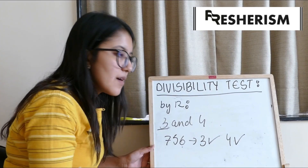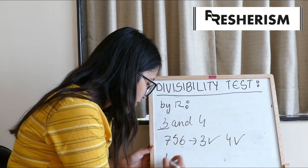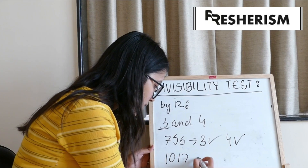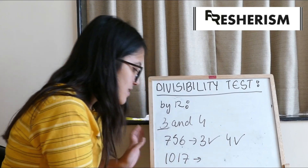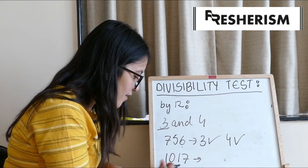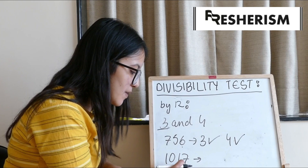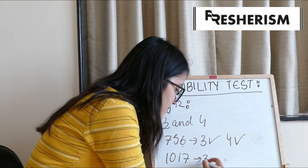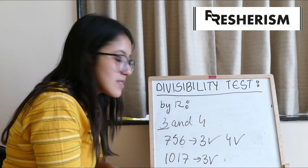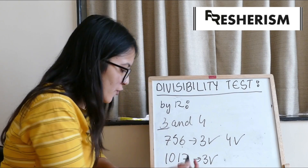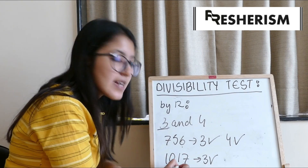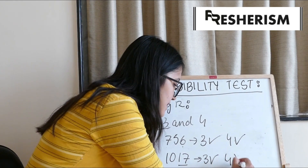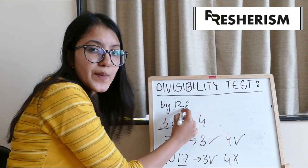Let us take another example: 1,017. Divisibility test for 3: 1 plus 0 plus 1 plus 7 equals 9, hence it is divisible by 3. Divisibility test for 4: is 17 divisible by 4? Obviously not. Hence, 1,017 is not divisible by 12. That's it for this concept.